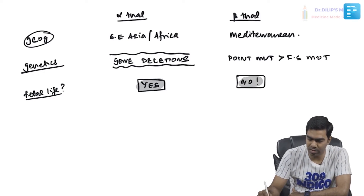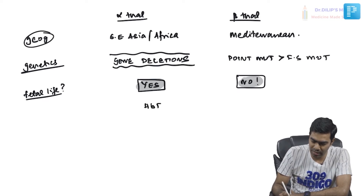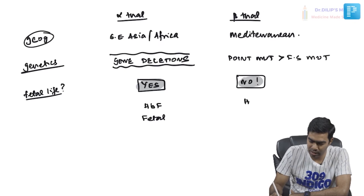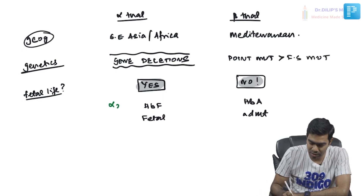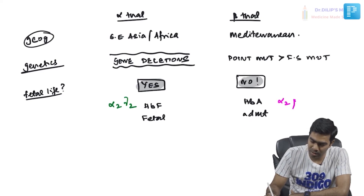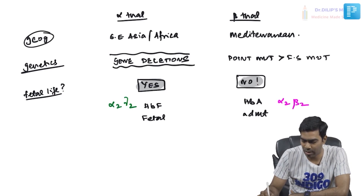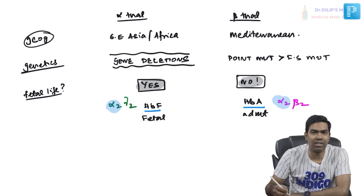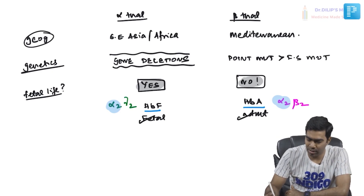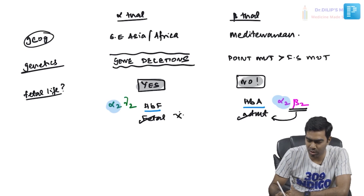The reason beta thalassemia cannot present in fetal life is that there are two hemoglobins: HBF in fetal life and HBA in adult life. HBF consists of alpha-2 and gamma-2 chains, while HBA consists of alpha-2 and beta-2 chains. Crucially, both HBF and HBA require alpha chains, so alpha thalassemia — if severe enough — can cause problems in both fetal and adult life.